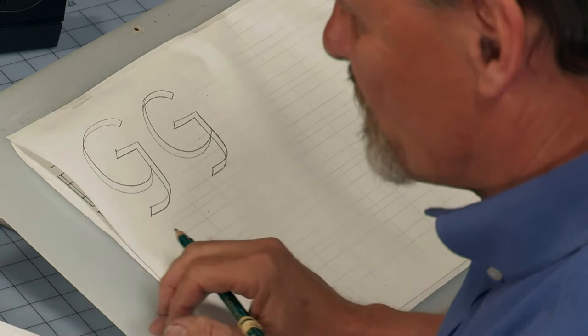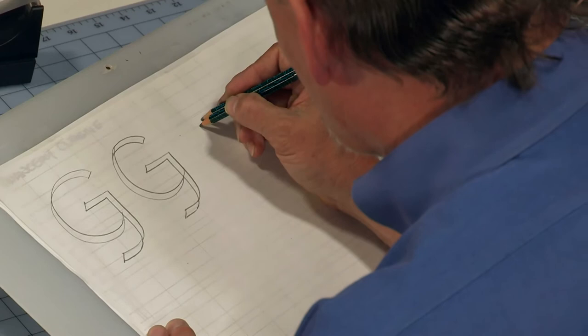Now let's talk about a lowercase g and you've got your guidelines there in front of you, right? Let's do a lowercase g. Very predictably. A small curve.